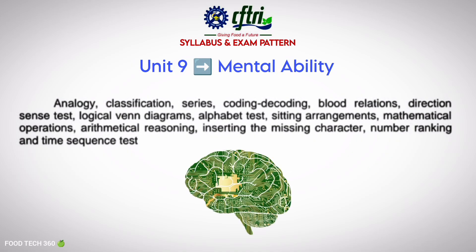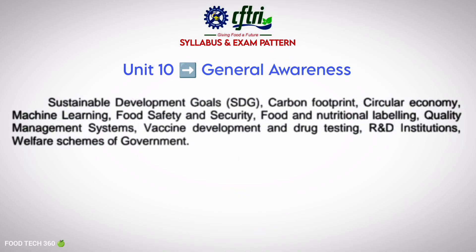Unit 9 is Mental Ability. For this unit you should sharpen your reasoning skills and practice series, blood relations, coding-decoding, Venn diagrams, and number sequences. This section is like any aptitude test — pretty basic but high scoring if you practice.